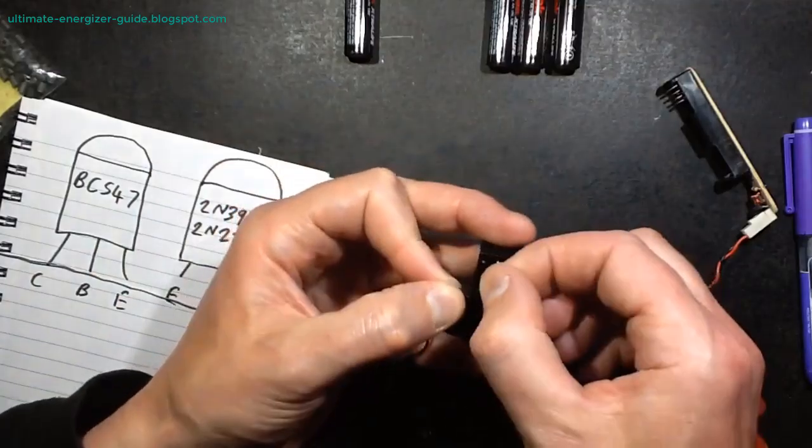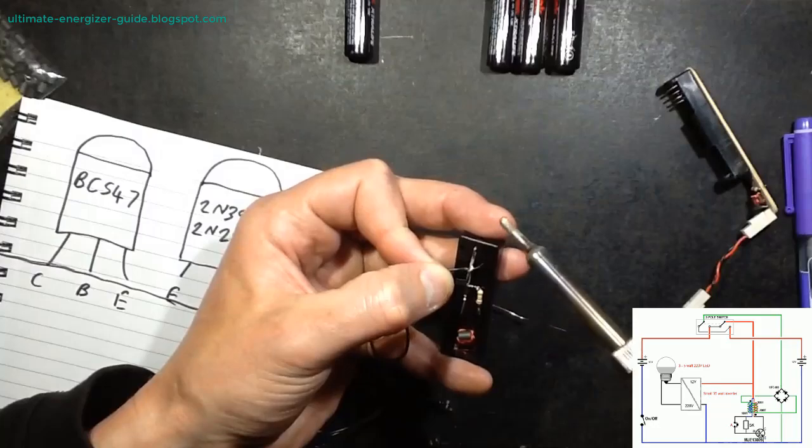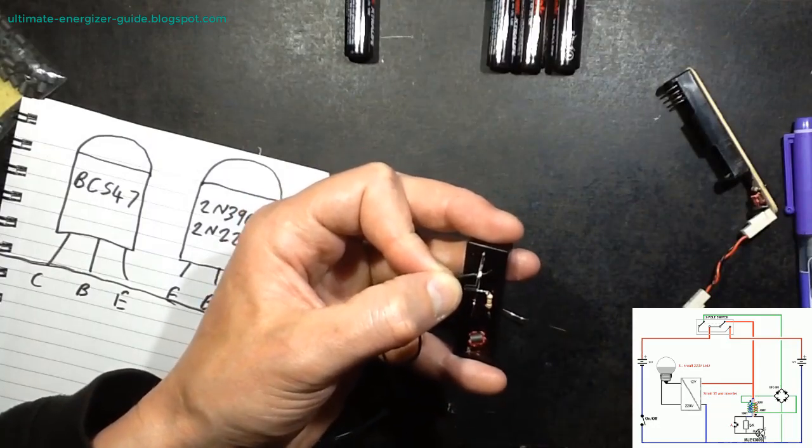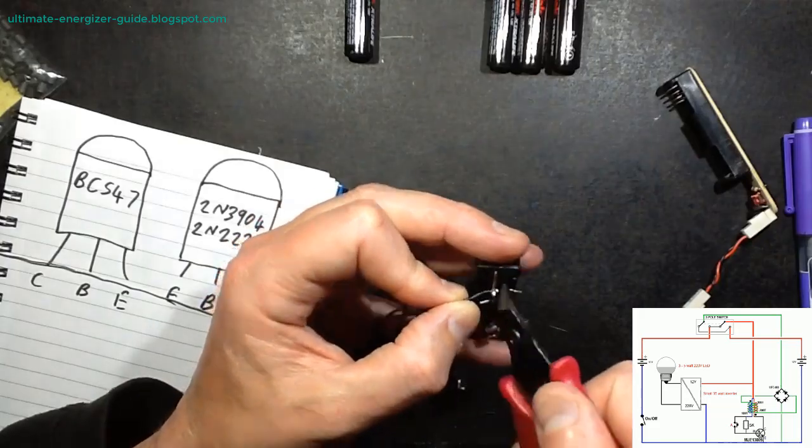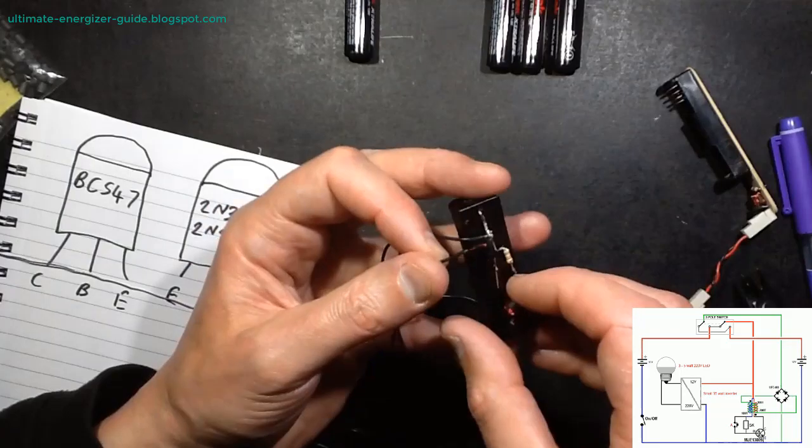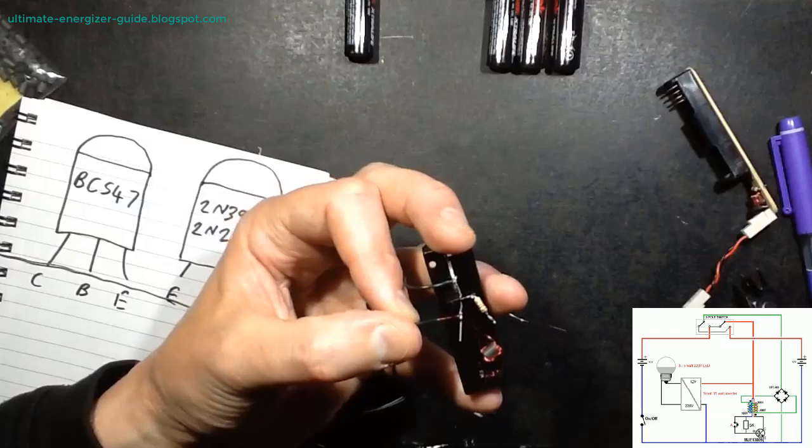For many years, skilled electronic engineers have quietly experimented with variations of the Joule Thief, producing intriguing over-unity results that have yet to be widely acknowledged. This secrecy, some claim, has kept many of these advancements out of mainstream awareness. But an increasing number of DIY experimenters and free energy enthusiasts are beginning to break new ground.